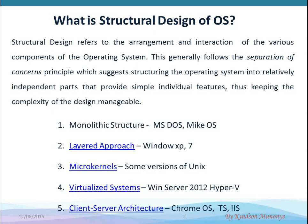We are going to discuss five approaches to the design of an operating system. The five of them are: the first one, monolithic structure; the layered approach; micro-kernels; virtualized systems; and the client-server architecture.